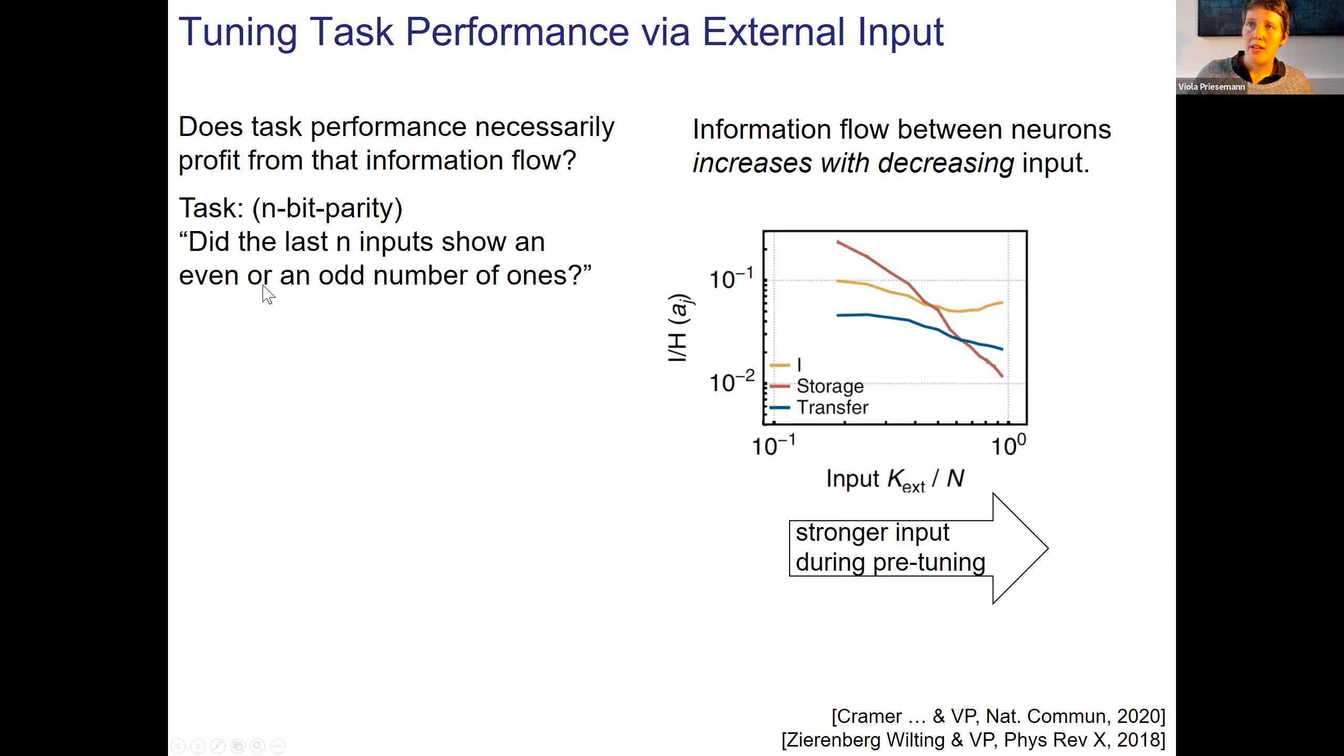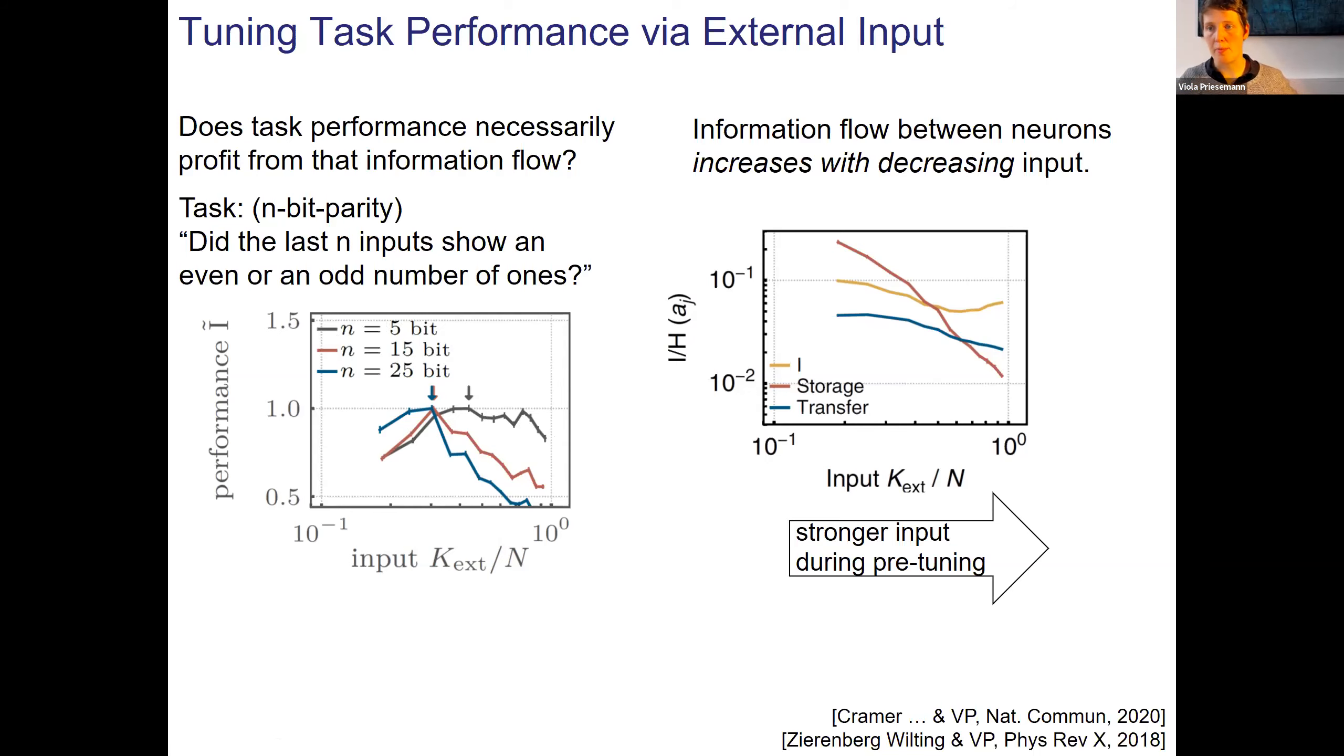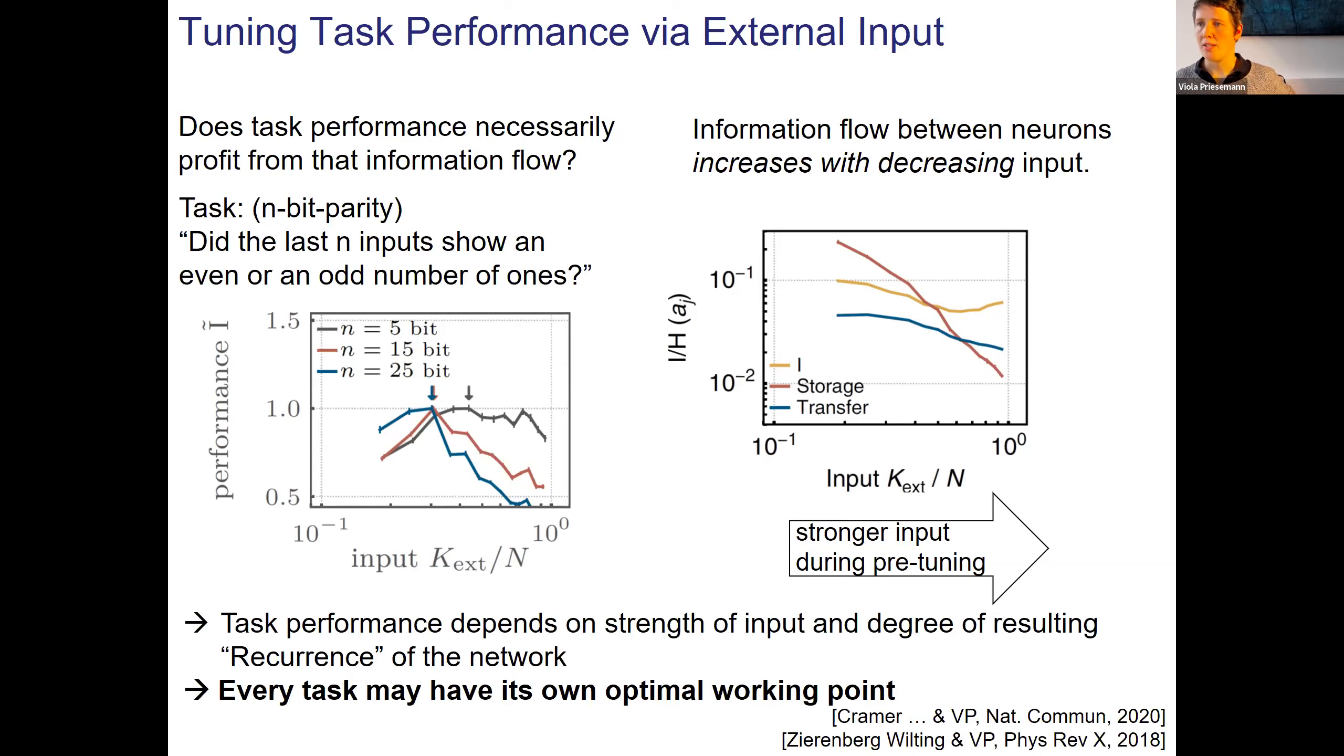We measured the storage and the transfer of information in the network, the transfer of information between pairs of neurons in the recurrent network. They increase with decreasing strength of input. This is the stronger input on the right-hand side, the more continuous activity. This is the more burst activity. The information transfer and the storage, they all go up. This is predicted from theory, and it's good to see that this also happens in this neuromorphic network. Information flow between neurons increases with decreasing input, or one could say it increases the more bursty, the more recurrent the network also becomes.